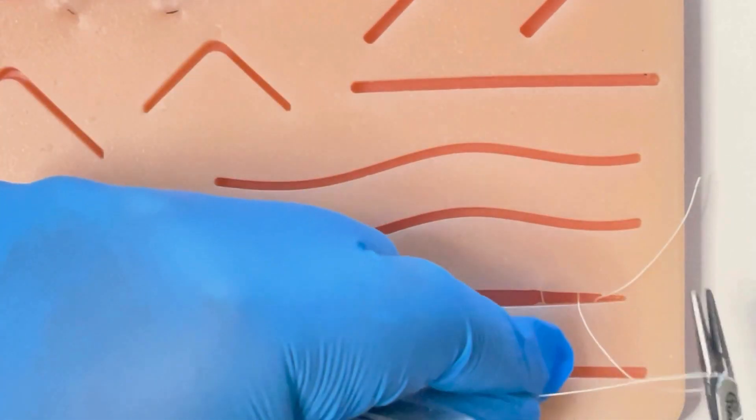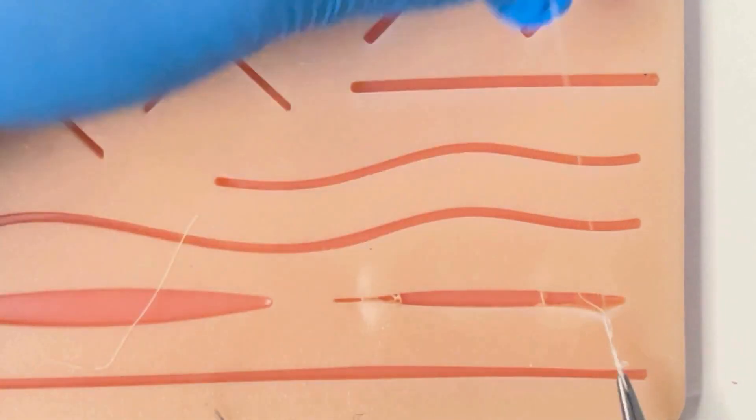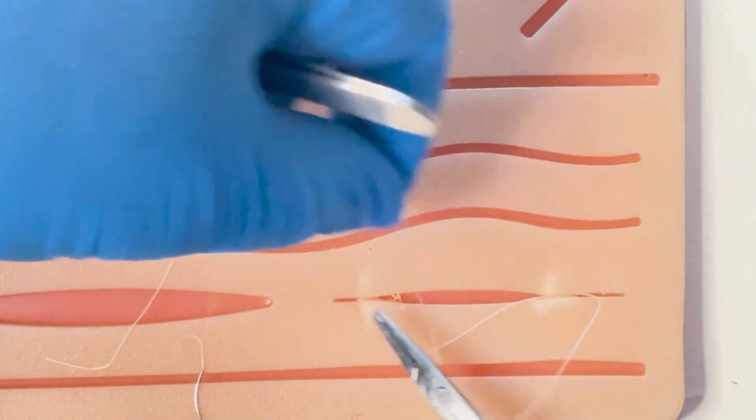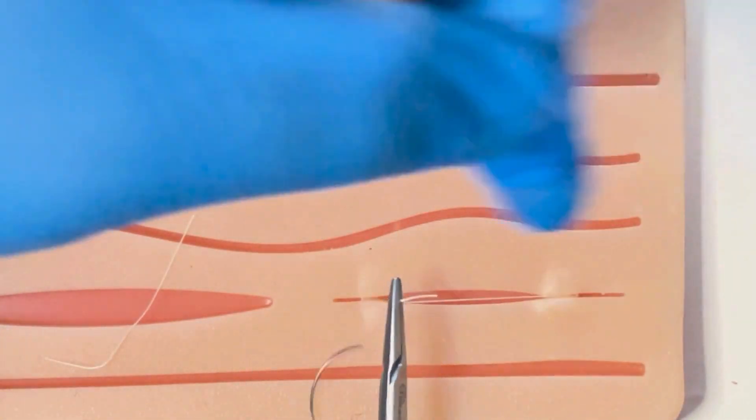You tie your knots parallel to the wound. This is a useful stitch for eliminating tension from a wound. You typically use a long lasting dissolvable suture.